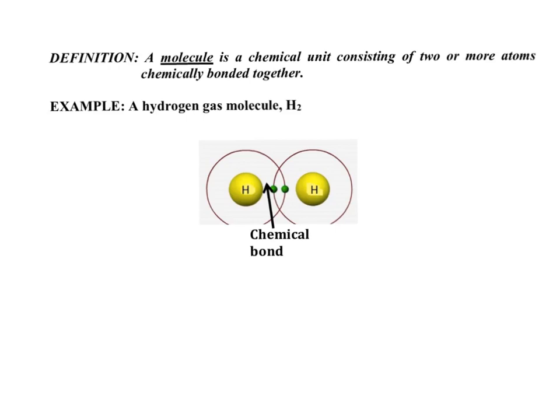In this video we're going to look at the concept of a molecule. Now a molecule is first and foremost a chemical unit. That means it has specific properties because of its composition - the atoms it's made up of. It also has a specific shape and therefore behaves in a certain way. But it's a chemical unit consisting of two or more atoms.